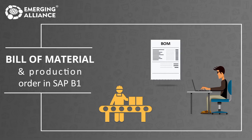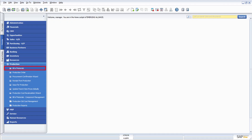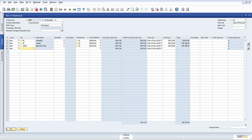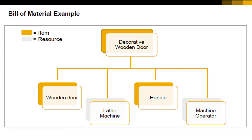In this video you will get to know in detail about Bill of Materials and Production Order in SAP Business One. The Bill of Materials concept in SAP Business One can be explained with an example: in order to manufacture an engraved wooden door, we need two items — a plain wooden door and a handle.